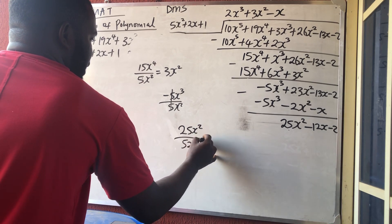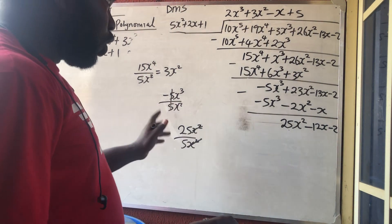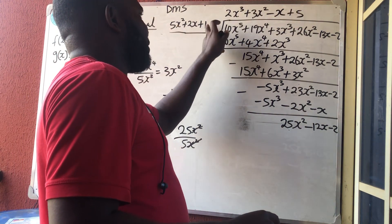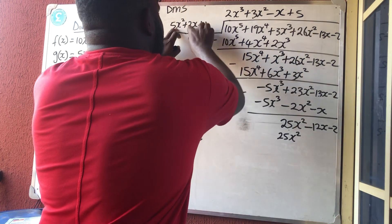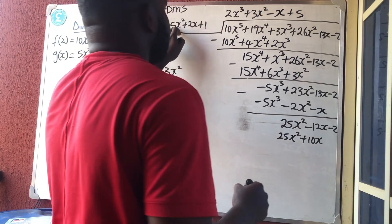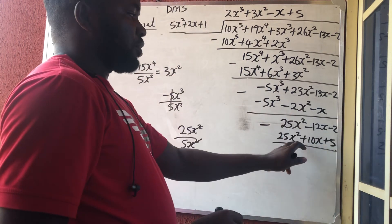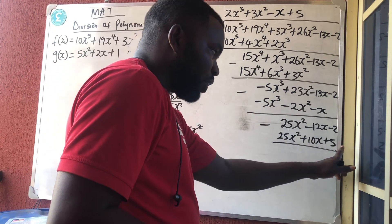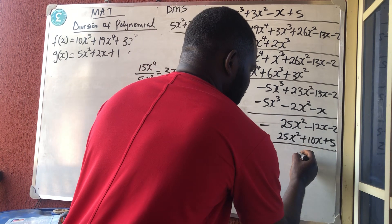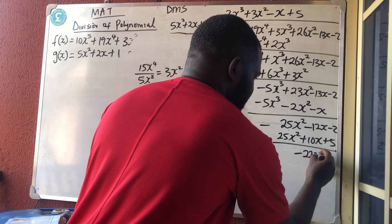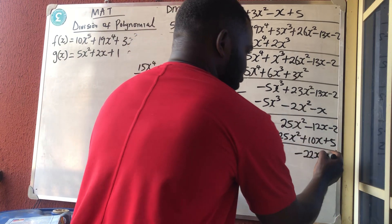Division: 25x² divided by 5x² — 25÷5 = 5, so +5 is added to the quotient. Multiplication: 5 times 5x² gives 25x². 5 times 2x gives 10x. 5 times 1 gives 5. Subtraction: minus times plus is minus, so −12 minus 10 gives −22x. Minus times plus is minus, so −2 minus 5 gives −7.